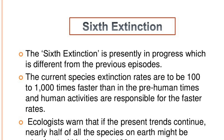The sixth extinction is presently in progress, which is different from previous episodes. The current species extinction rates are estimated to be 100 to 1,000 times faster than in pre-human times, and human activities are responsible for these faster rates. Ecologists warn that if the present trend continues, nearly half of all species on earth might become extinct.